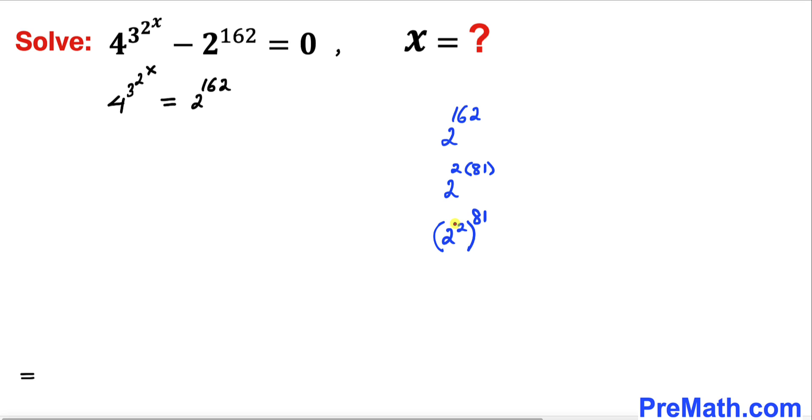Inside the parentheses, 2^2 is simply 4. Therefore this could be written as 4^81. So we're going to replace 2^162 with 4^81.